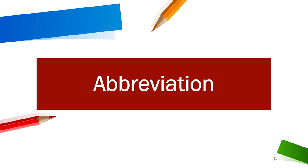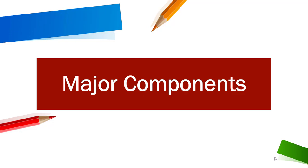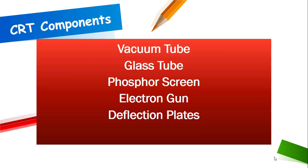That we have is CRT and LCD. Abbreviation: CRT stands for cathode ray tube and LCD stands for liquid crystal display. Major components: The major components of CRT monitor are vacuum tube, glass tube, phosphor screen, electron gun, and deflection plates.